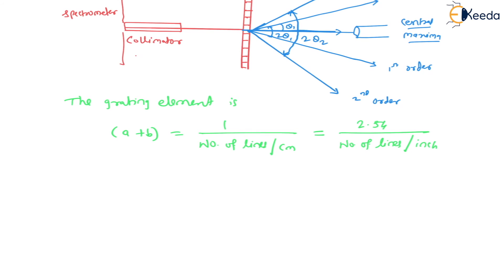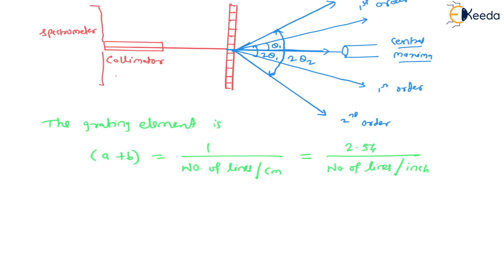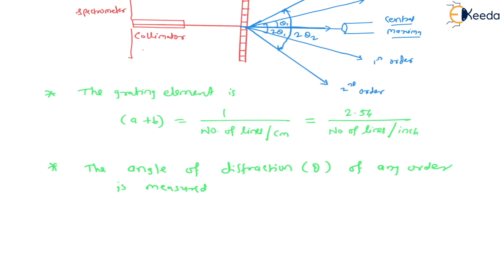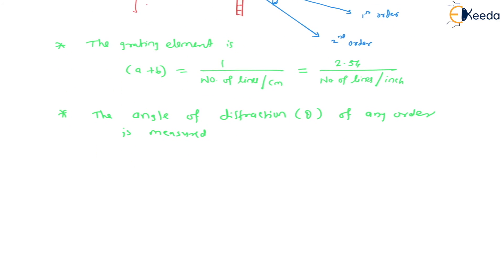First we find (a + b), then we measure the angle for a particular order. For first order that is twice theta 1, for second order it is twice theta 2. So theta is the angle of diffraction for any order. Now we have two values: the diffraction angle theta and the grating element (a + b). We can then find the wavelength using the formula: (a + b) sin(theta) = m * lambda.